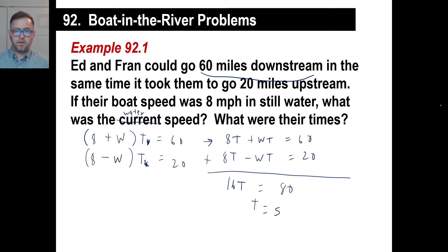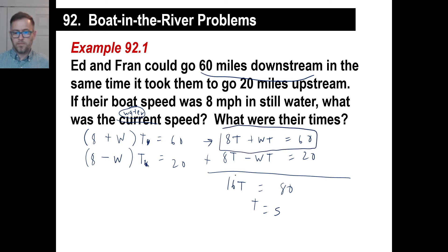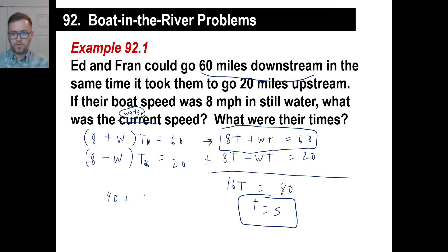Adding gives us 16t = 80, so t = 5. The time is 5 hours. Now they ask what was the water speed, so we need to find w. Substituting t = 5 into the first equation: 8 × 5 = 40, plus 5w = 60. So 5w = 20, and w = 4.